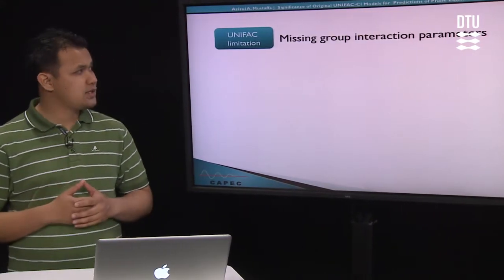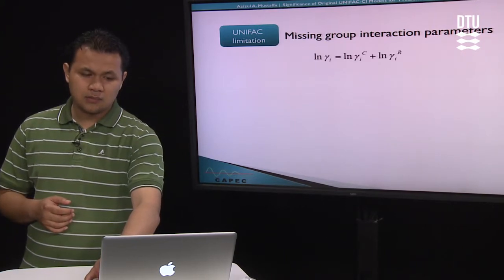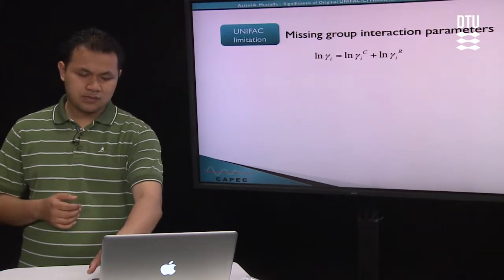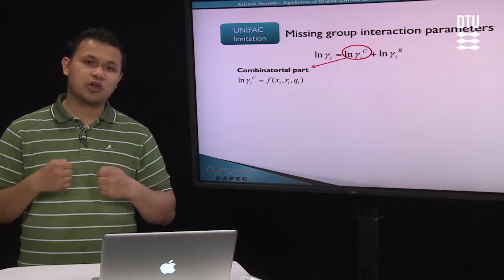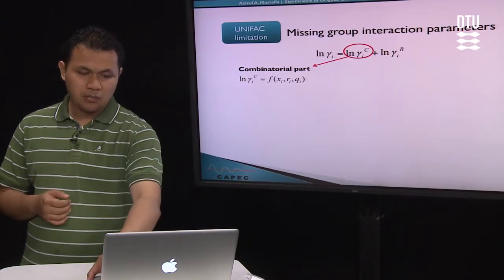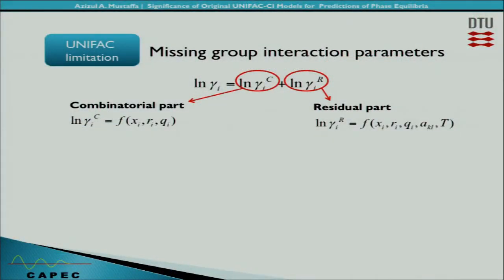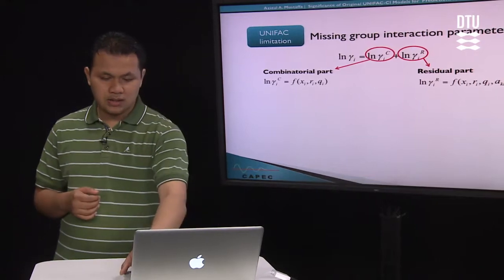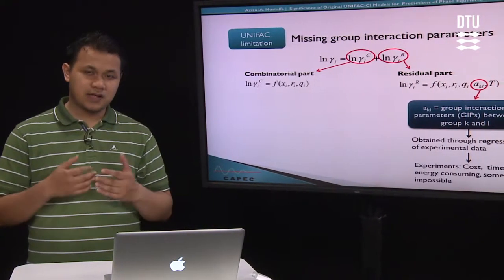One principal limitation of this UNIFAC model is the missing group interaction parameters. Basically, this is the general UNIFAC equation. It consists of two main parts. The first part is the combinatorial part which accounts for the differences in the molecular size and shape, and the second part is the residual part which accounts for the energetic interactions between molecules. It is a function of the liquid composition, the UNIFAC group volume and surface area, temperature, and the group interaction parameters which are normally obtained through regression of experimental data.